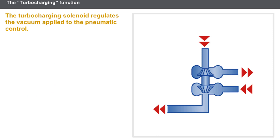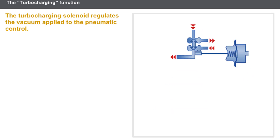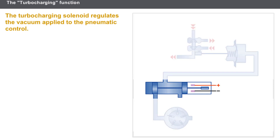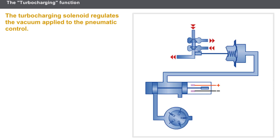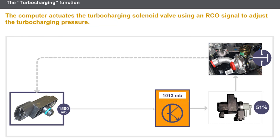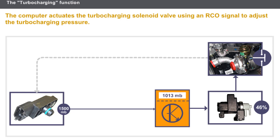There are various types of turbocharger; however, the control principle is the same. The regulation system is activated via a pneumatic control. The pneumatic control is linked to the vacuum pump via a pneumatic circuit. The turbocharging solenoid regulates the vacuum applied to the pneumatic control. The pressure sensor informs the computer of the turbocharging pressure inside the inlet manifold. The computer actuates the turbocharging solenoid valve using an RCO signal to adjust the turbocharging pressure. The solenoid valve controls the pneumatic control by activating the turbocharger regulation system.